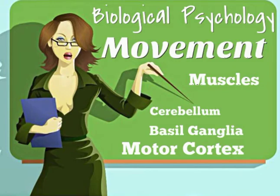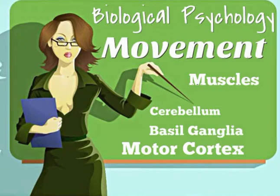How does the brain control movement? Where in the brain is movement? Are there more regions than just one? What neurotransmitters are involved? There's a difference in the peripheral nervous system versus the central nervous system. Of course, we have a little section on the disorders of movement conditions.